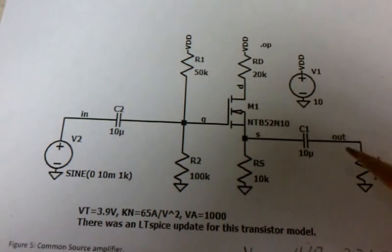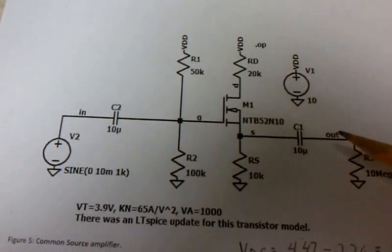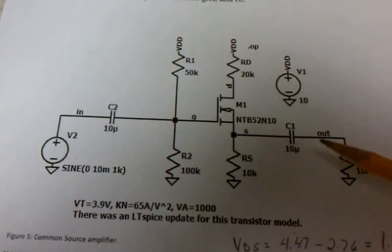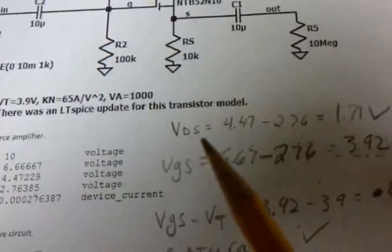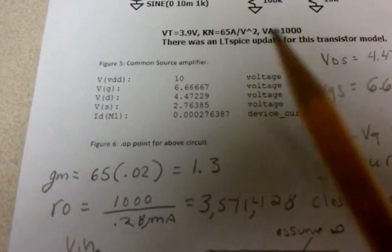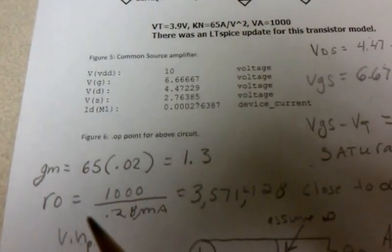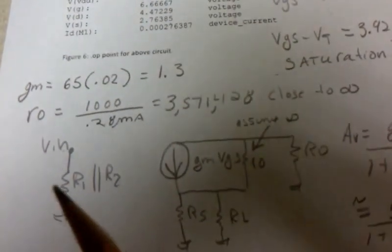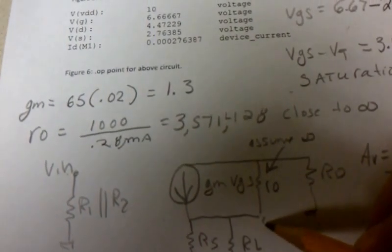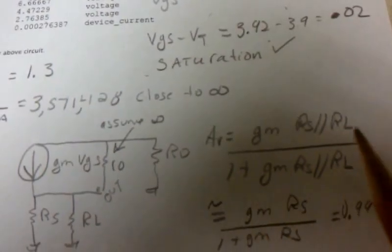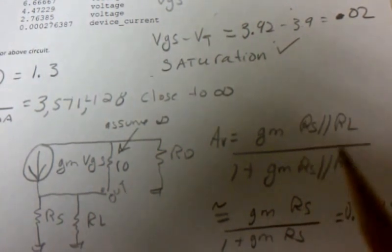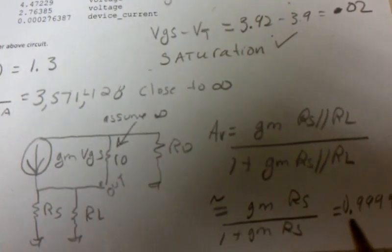Here we have a common drain amplifier, and V out is being taken off of the source, not the drain. I've already given you the bias points, so you can do a quick check of VDS versus VGS minus VT, and yes, it's in saturation. GM in this case—this is a power device—happens to be 1.3. RO is very large, close to infinity, so we get our small signal model here. Remember, V out is here, not here. When we go through the derivation, we get this equation. RL is so much bigger than RS it drops out, and so it's approximately equal to this, which is very close to 1.